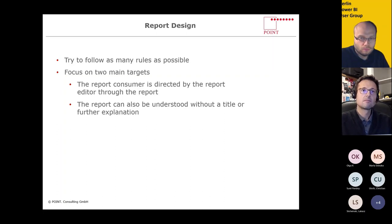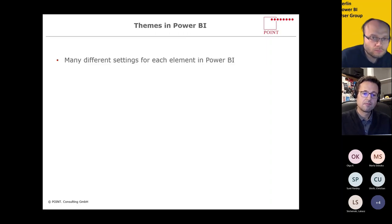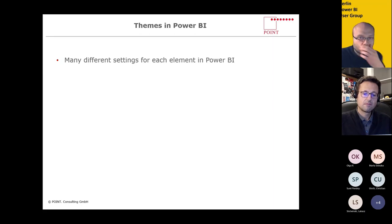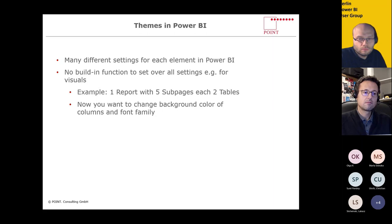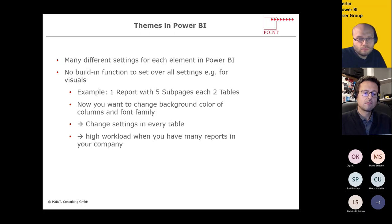How can we design our reports in Power BI according to our defined colors and settings? There are a lot of settings for each visual in Power BI. For each visual I could set the settings once and export them as a JSON file, then send that file to each report creator. But if I have changes — for example due to changes in corporate identity — a manual change in Power BI is not easy or fast. There's no built-in function in Power BI to set overall settings for all visuals at once. If I have a report with five sub-pages each containing two tables and I want to change the background color and font family, I have to change settings in every table in every report, which demands a high workload.